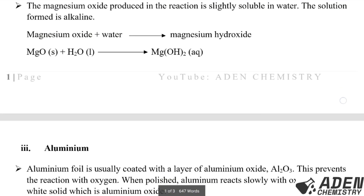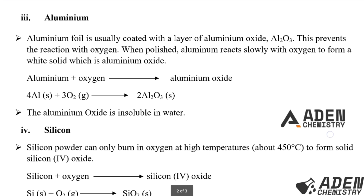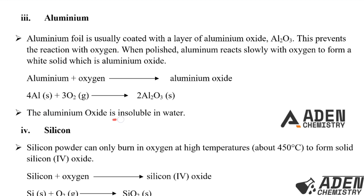The third element is aluminium. Aluminium foil is usually coated with a layer of aluminium oxide (Al₂O₃), which prevents reaction with oxygen. When uncoated, aluminium reacts slowly with oxygen to form a white solid which is aluminium oxide. The word equation: aluminium plus oxygen gives aluminium oxide. The balanced equation is: four moles of aluminium solid react with three moles of oxygen gas giving two moles of aluminium oxide (solid).